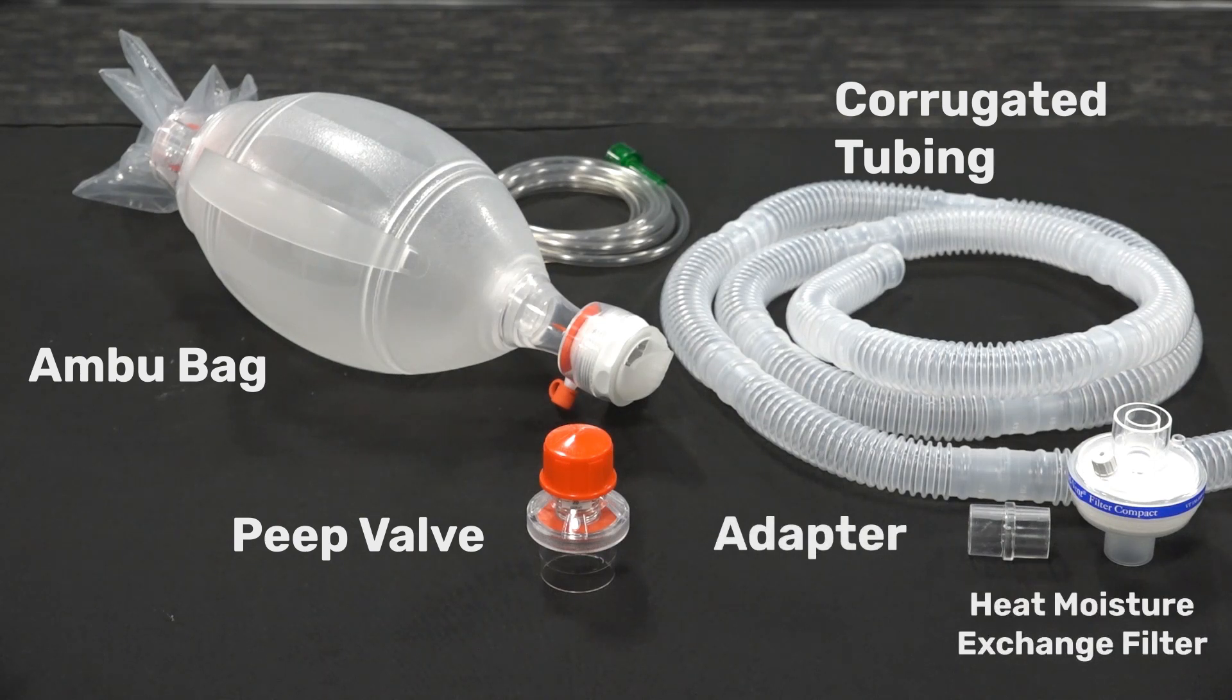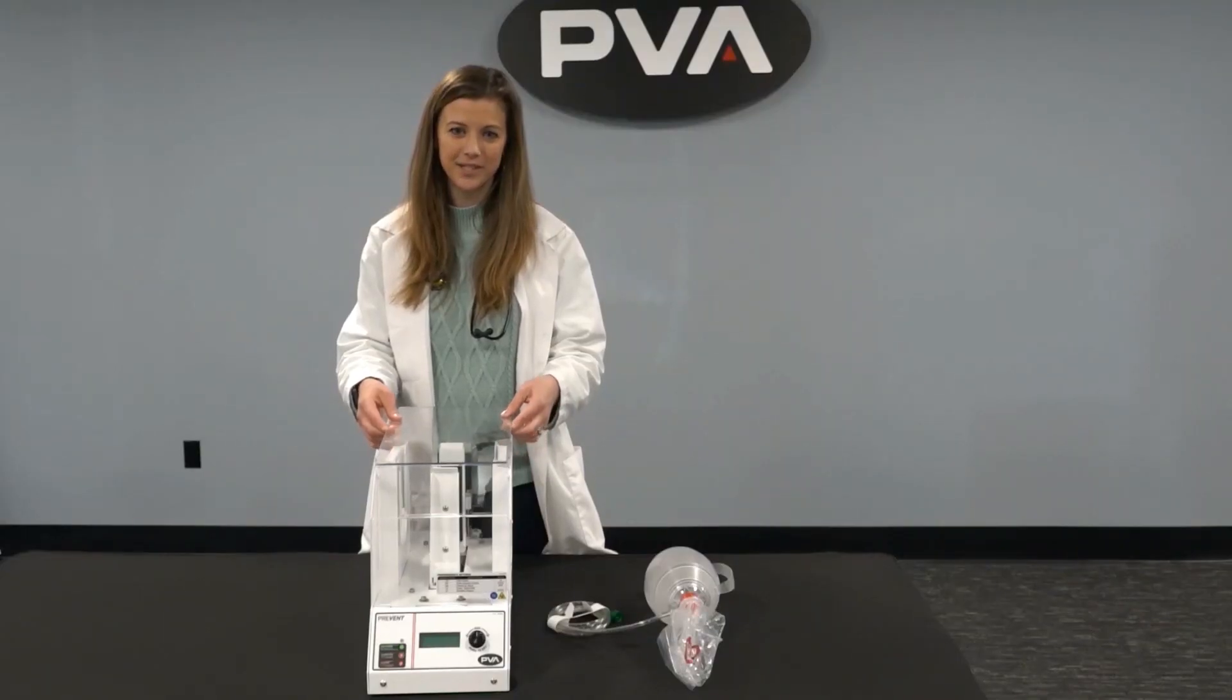Prevent is designed for use with an inline heat moisture exchange filter for minimal dead space, low moisture output, and limited resistance. It is also compatible with a HEPA filter. To install the resuscitation bag, first remove the safety cover.